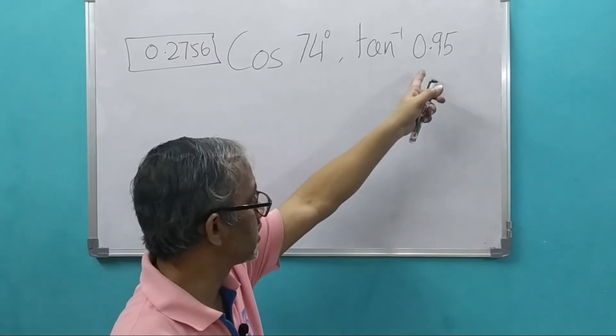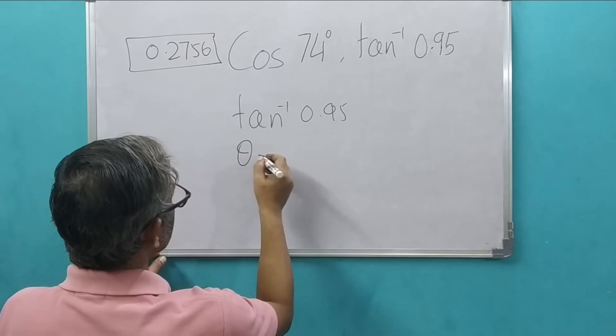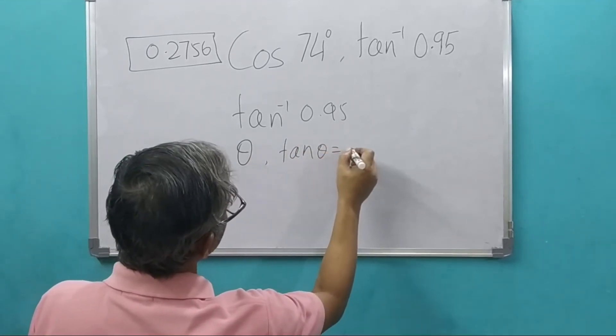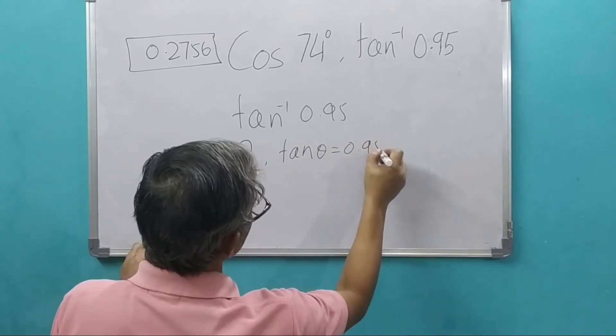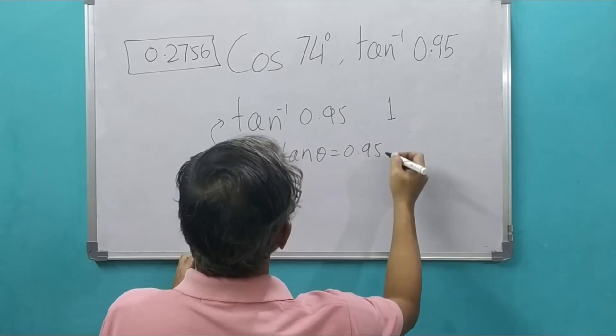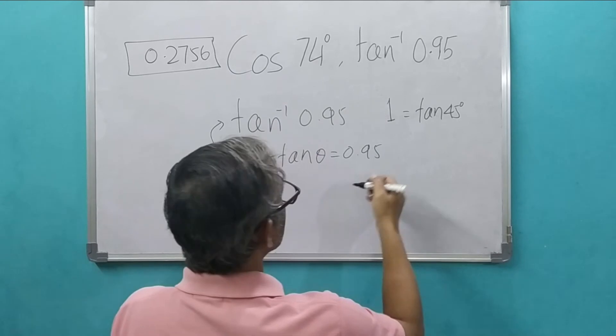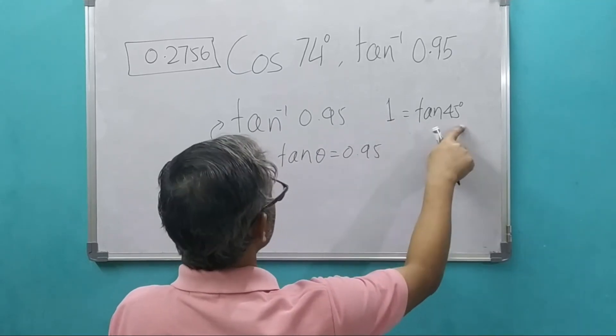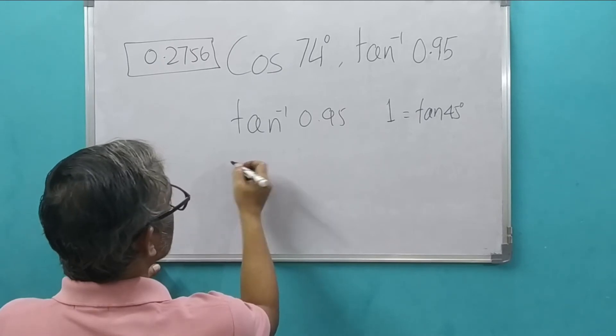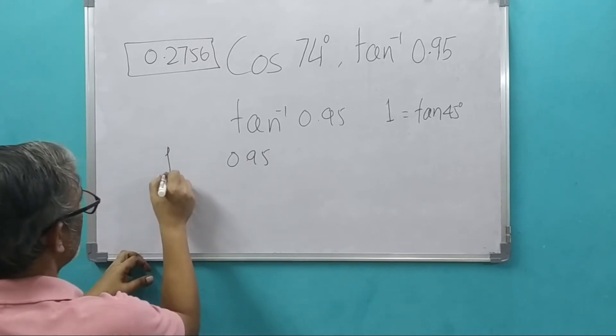Okay. The next is tan inverse 0.95. What it means is that theta should be such that tan theta would be equal to 0.95. 0.95 is close to 1 where theta becomes 45 degrees. So this we can take the reference to find out this.